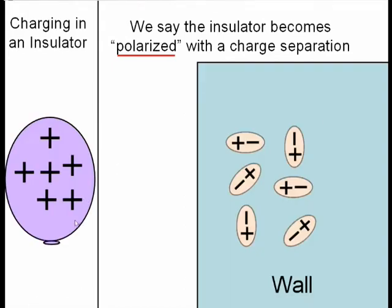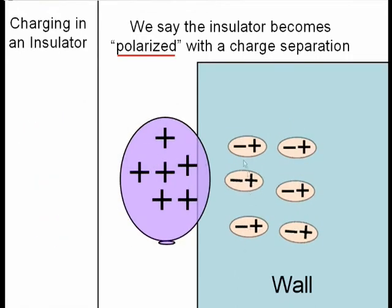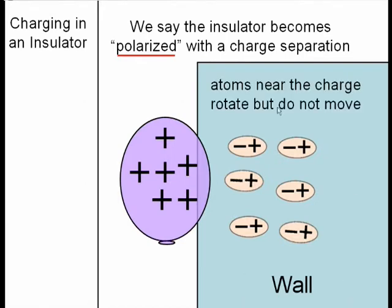the balloon has an excess positive charge on it. And as I bring it towards the wall, the atoms in the wall are rotating, so the negative side of the atom is pointing towards the balloon. That builds up sufficient attraction for the balloon to stick to the wall. The atoms near the wall are rotating, but they do not move.